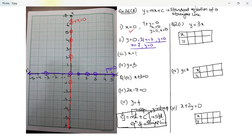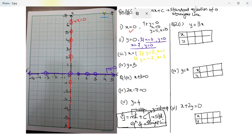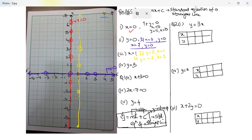Now let's look at the third one: x equal to one. If y is three, x is one. If y is negative two, x is still one. If y is one, x is still one. So this line, which passes through x equal to one and is parallel to the y-axis, is the line x equal to one.